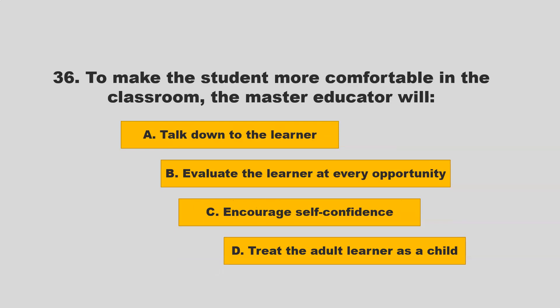To make the student more comfortable in the classroom, the master educator will: A) talk down to the learner; B) evaluate the learner at every opportunity; C) encourage self-confidence; D) treat the adult learner as a child. If you chose C — encourage self-confidence — you are correct.